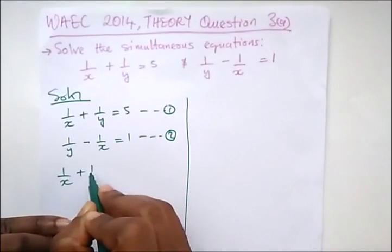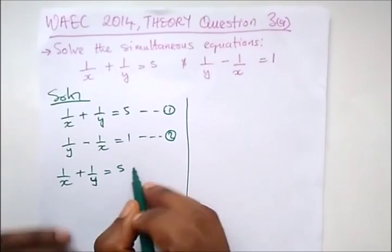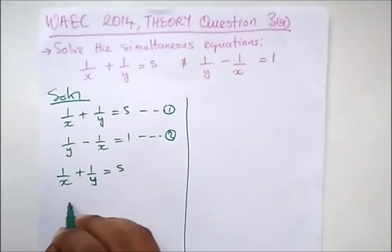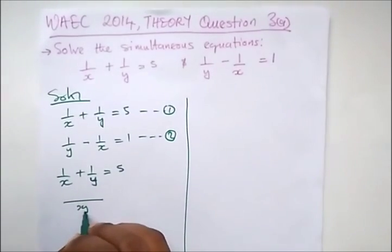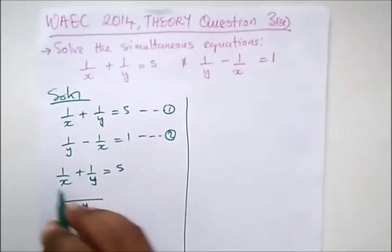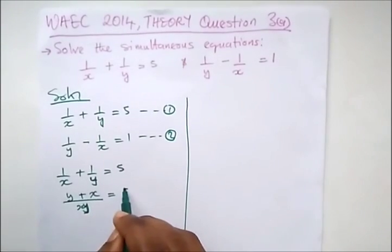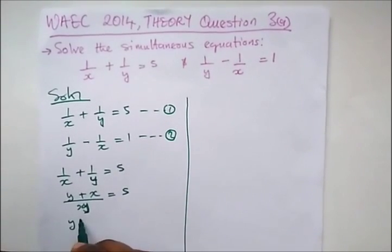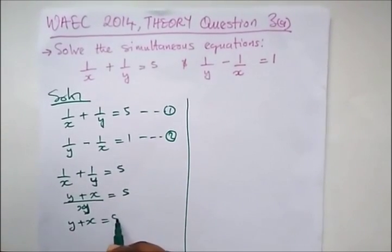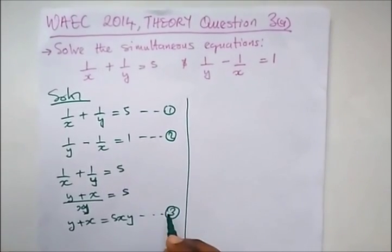For equation one, let's simplify it — cancel out the fractions. The LCM of this is xy, so x will cancel x and we have y plus x equal to five. We can simplify this by cross-multiplying by xy, so we have y plus x equal to 5xy. Let's take this as our third equation.